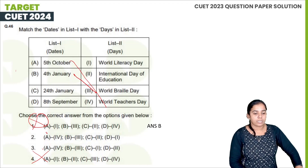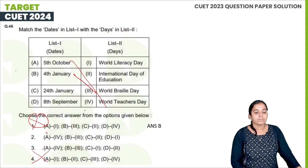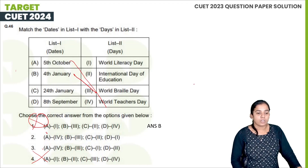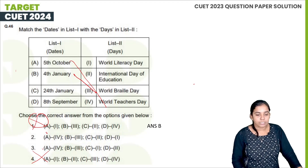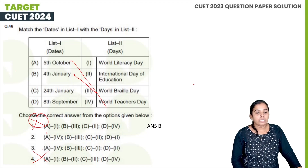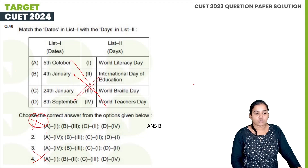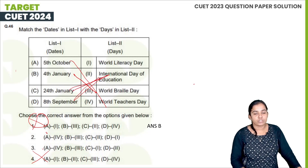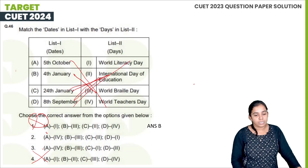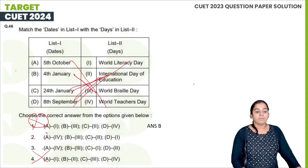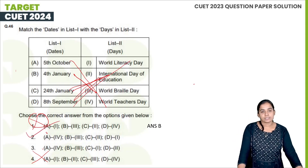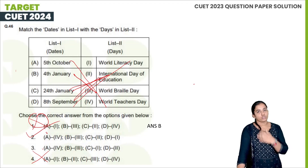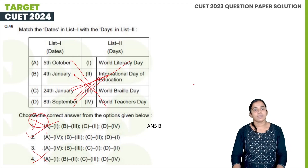So, option B has 3 matches. 24th January is International Day of Education, and 8th September is World Literacy Day. Option B is the right answer — these days match correctly.